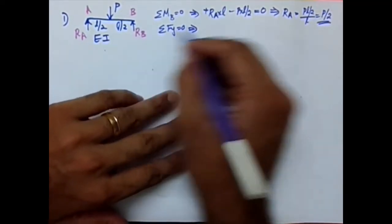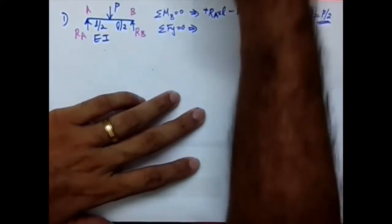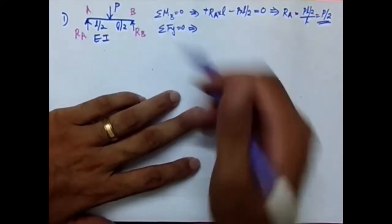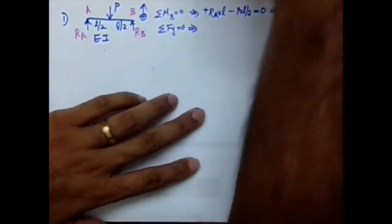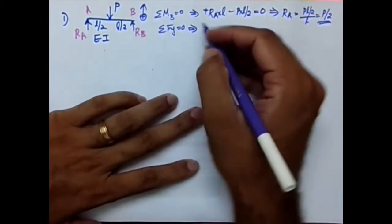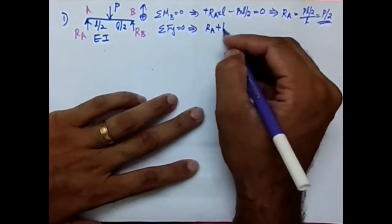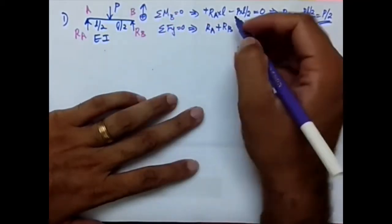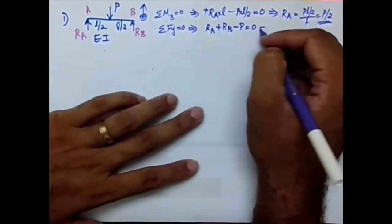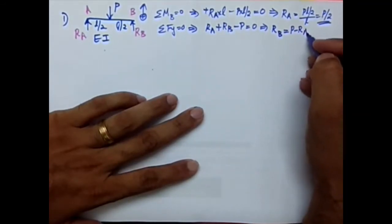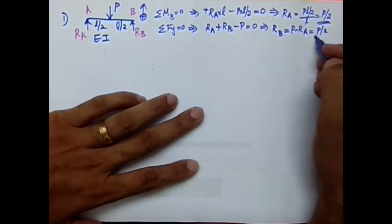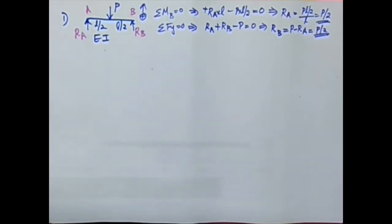Now I apply Sigma Fy = 0, considering upward forces as positive. RA and RB are upward (positive) and P is downward (negative): RA + RB − P = 0. This gives RB = P − RA = P − P/2 = P/2. So this is the very first part — you need the reactions RA = P/2 and RB = P/2.